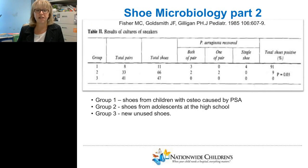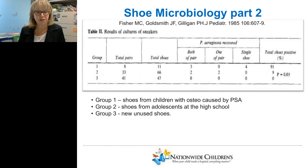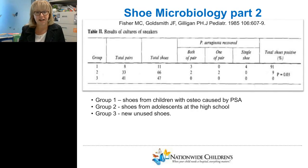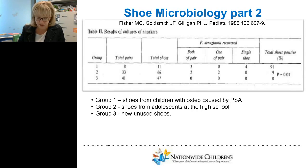Then Peter Gilligan's group did something very interesting. They had three groups: Group 1 — people with known bone infections due to Pseudomonas. In nearly 91% of them, they found Pseudomonas in the shoes. Group 2 — control group of used shoes from adolescents — some Pseudomonas but less. Group 3 — new, unused shoes — none found. The key difference from the previous study was that they took out the foam lining of the shoe and cultured that. That moist foam is indeed where the Pseudomonas lives — almost like a little culture plate. A puncture wound going up through that foam will deposit those bacteria directly into tissue.